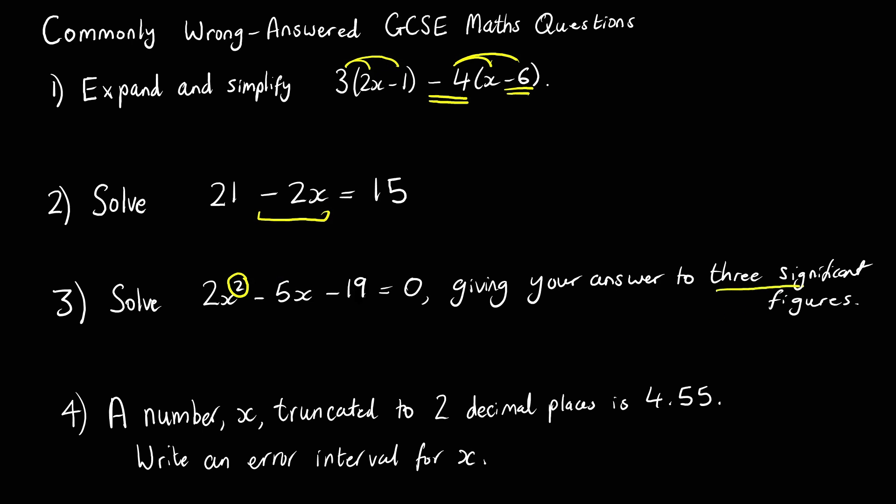And it says give your answer to three significant figures, that means we're using the quadratic formula. So what do we need to solve the quadratic formula? First of all you need to remember it, but we need our values for a, b and c. And again you might think, so a is 2, b might say is 5, and c might say is 19. These would be wrong answers. Think about why, because we've got a minus in front of them, instead of minus 5 and minus 19, they would be the correct values to then put into the formula.